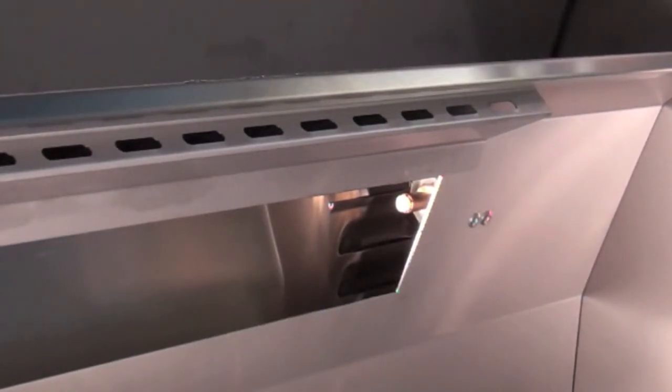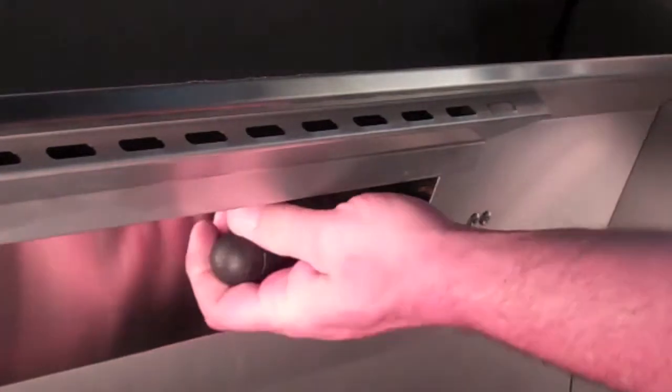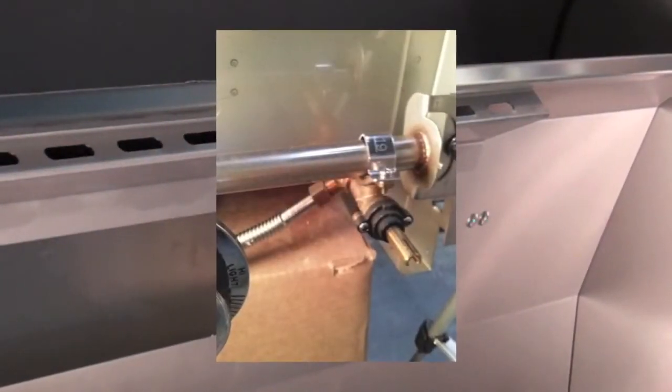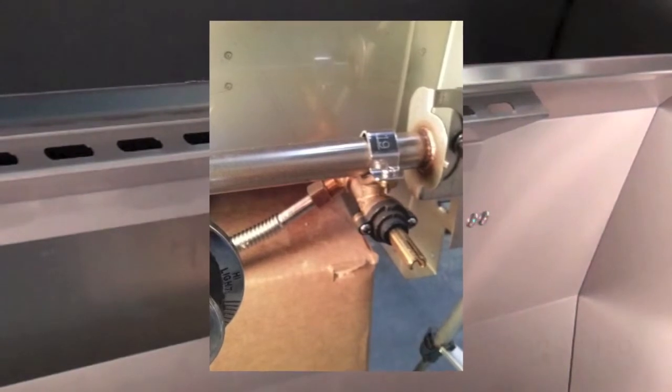To convert the grill to natural gas or propane, we unscrew the orifice and replace it. Although different from most barbecues, converting the orifice for propane and natural gas is fast and simple.